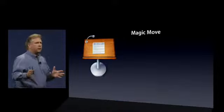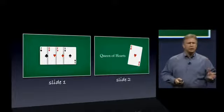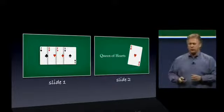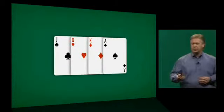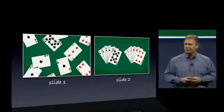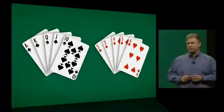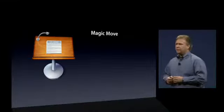First up, something we call Magic Move. Magic Move is a transition between slides where you set up your slides and Keynote does all the work to move your objects between them. For example, you have a bunch of cards on your first slide, move some off, take the queen of hearts, make it bigger, tilt it, add a reflection — then use Magic Move and Keynote does the transition. Here's a second example: cards all messed up on slide one, organized on slide two — ask Keynote to do a Magic Move. Really simple, really powerful.